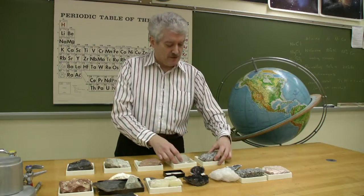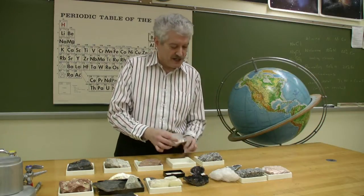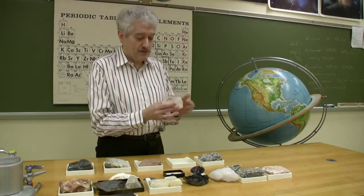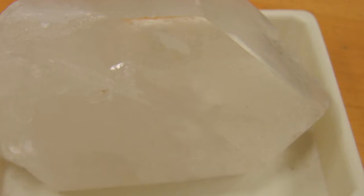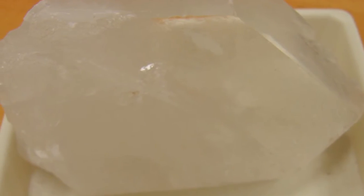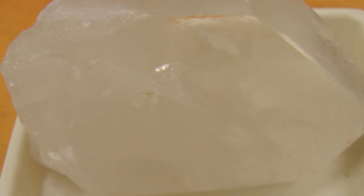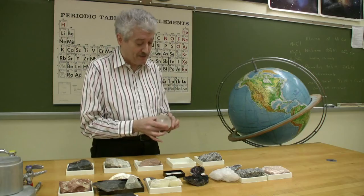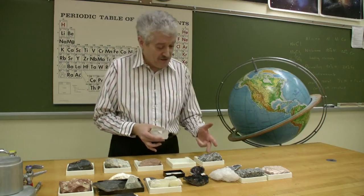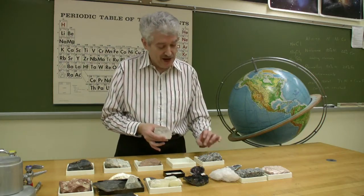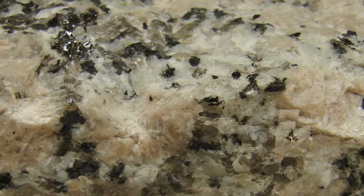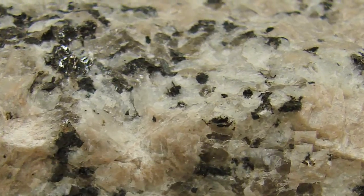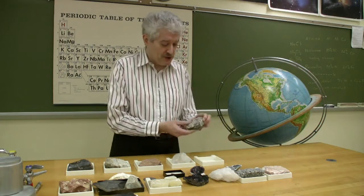Well, if you look at it, one of the first things that you'll see is quartz. Now quartz here in this specimen is a crystal, and you're not going to see anything this big and fancy in granite, but some of the gray, sort of translucent material in a granite specimen is going to be quartz.